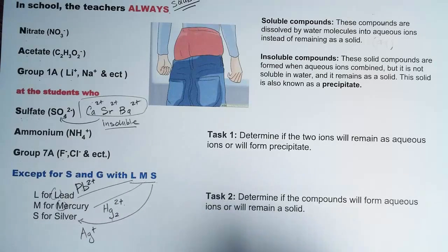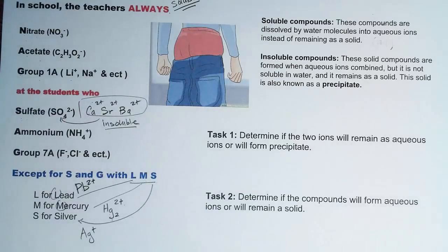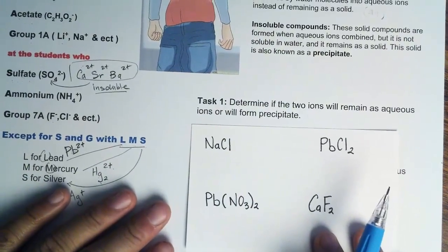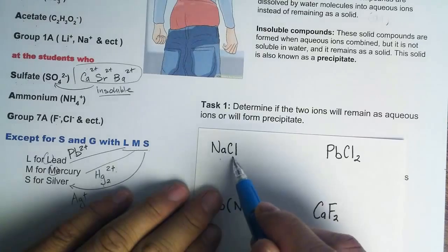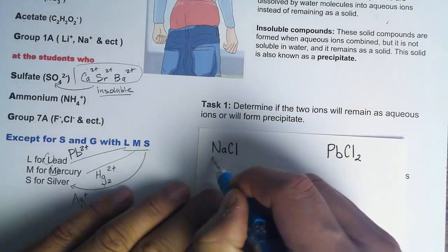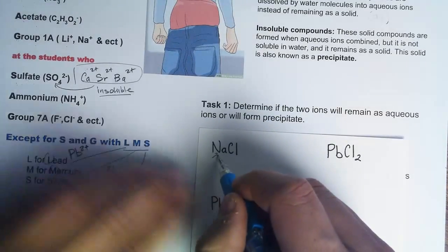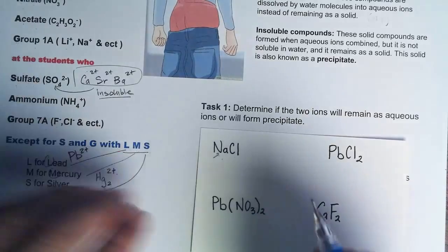Task number 2: determine if the compounds form aqueous ions or will remain solid. First, let's look at sodium chloride. Sodium is in Group 1A, so we know right away it is always soluble. When it is soluble, it becomes ions.